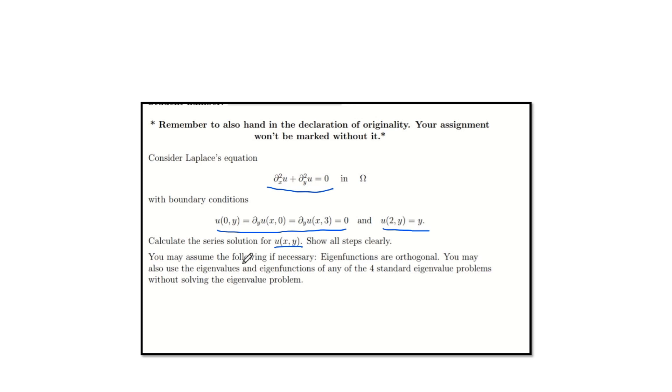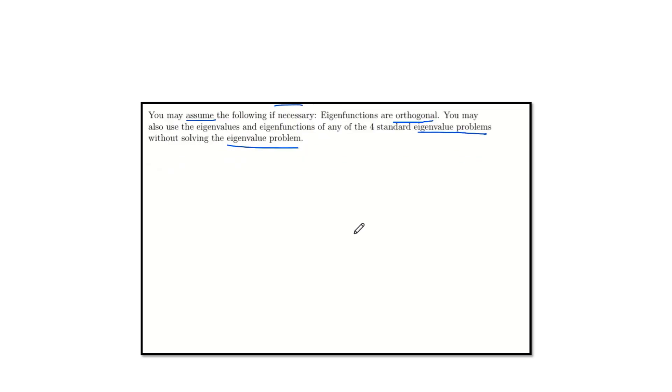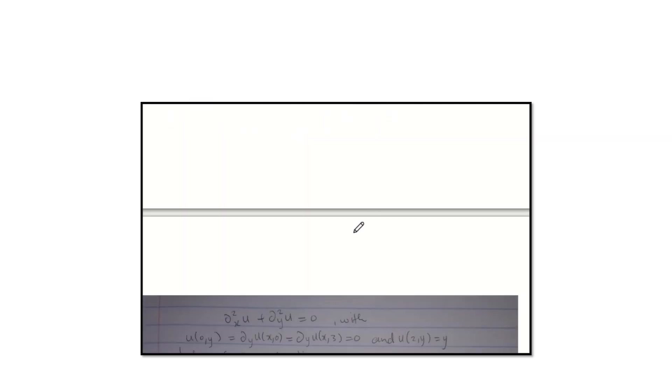Then we're given these few instructions, that we can make assumption that eigenfunctions are orthogonal, and we can use the four standard eigenvalue problems without solving them. So to the solution, I've already drafted the solution. So I'll just be going through the steps on how I got each step.